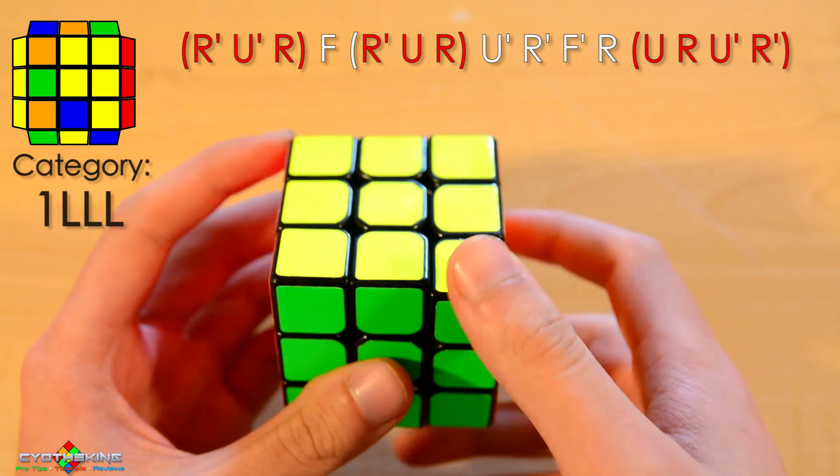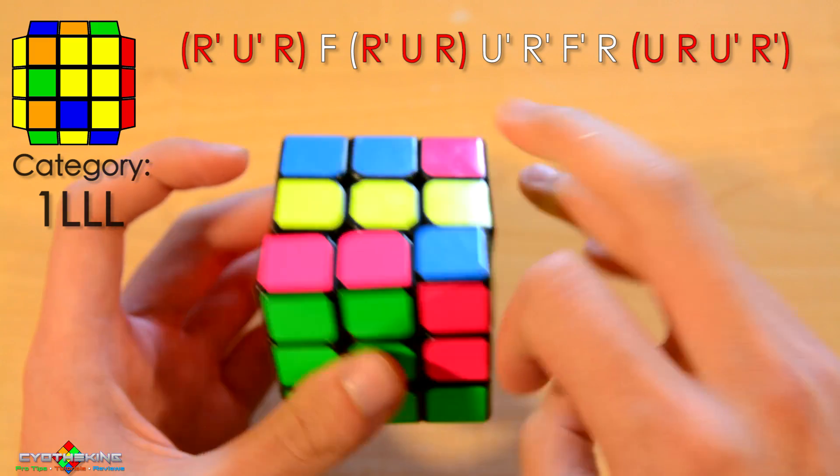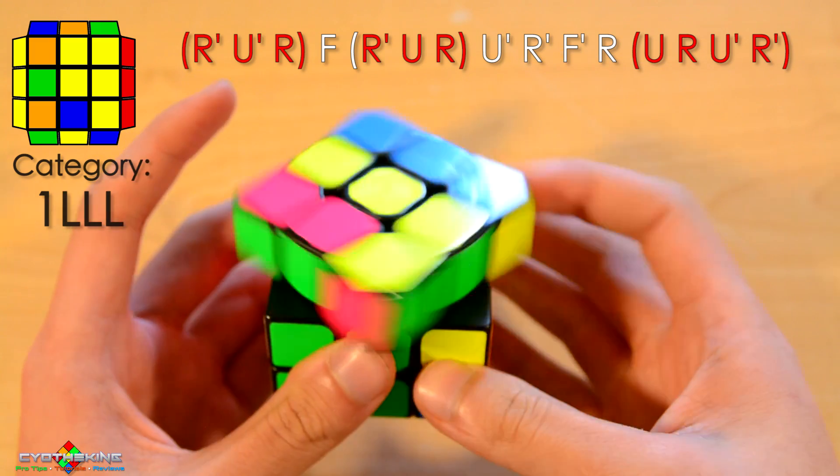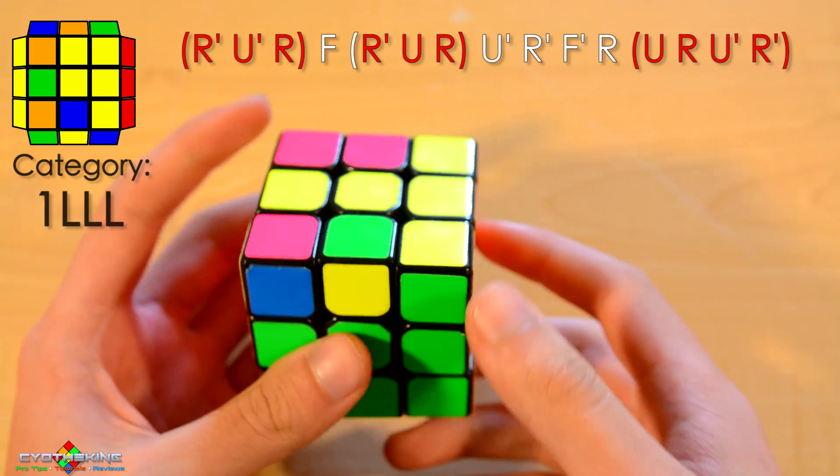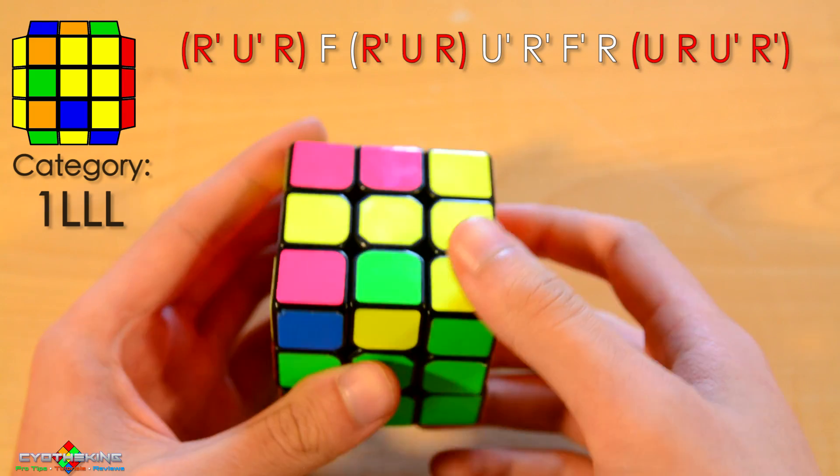So it's pretty easy to remember - take out the back slot, do an F move, insert the slot again, U prime, and then cancel into that OLL. So it's pretty easy to do and then executed fast.